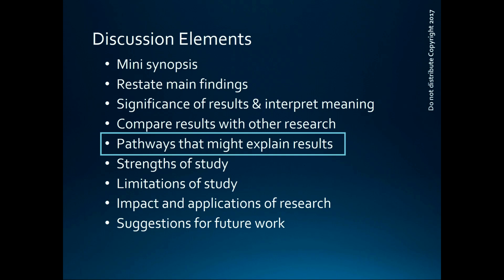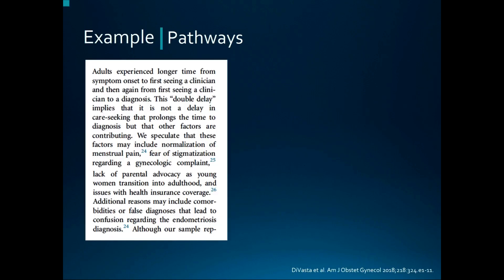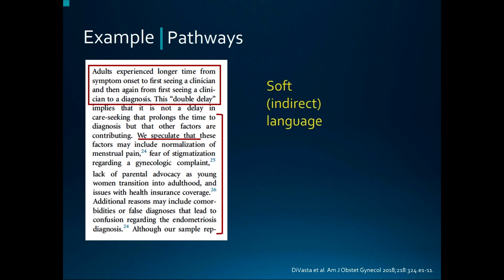This is a good example from the Vasta paper we looked at earlier, about a potential pathway through which adults and adolescents with endometriosis might behave in terms of care-seeking — adults waited longer. Here's the finding of interest and the authors' explanation of why this might have been the case. The authors acknowledge that they are speculating; the soft or indirect language used here is appropriate given that nobody really knows how the pathway works. Importantly, even though they are speculating, they still provide references to support their arguments about the proposed mechanisms.